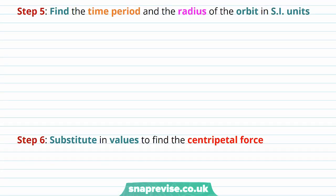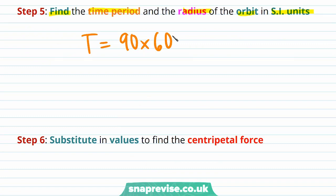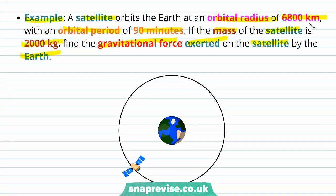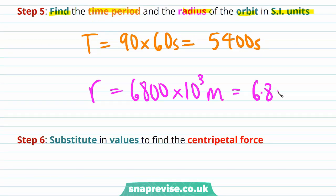Step 5 is to find the time period and the radius of the orbit in SI units. The time period is equal to 90 minutes, which is 90 times 60 seconds, which is 5,400 seconds. The radius is equal to 6,800 kilometres, which is 6,800 times 10 to the 3 metres, or 6.8 times 10 to the 6 metres.